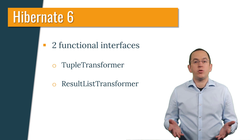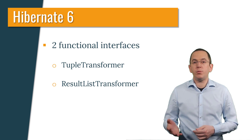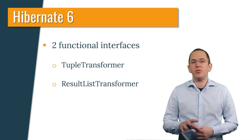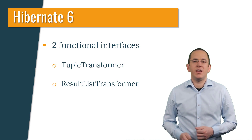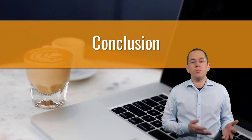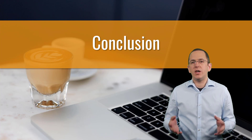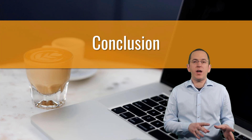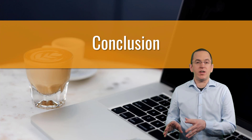Based on the ResultTransformer implementations provided by Hibernate 4 and 5, this will be a small but nice improvement. We will need to wait and see how this will affect existing ResultTransformer implementations. Hibernate's ResultTransformers provide various ways to map the result of your query to different data structures. They were commonly used in Hibernate 4, got deprecated in Hibernate 5, and will be replaced by functional interfaces in Hibernate 6.